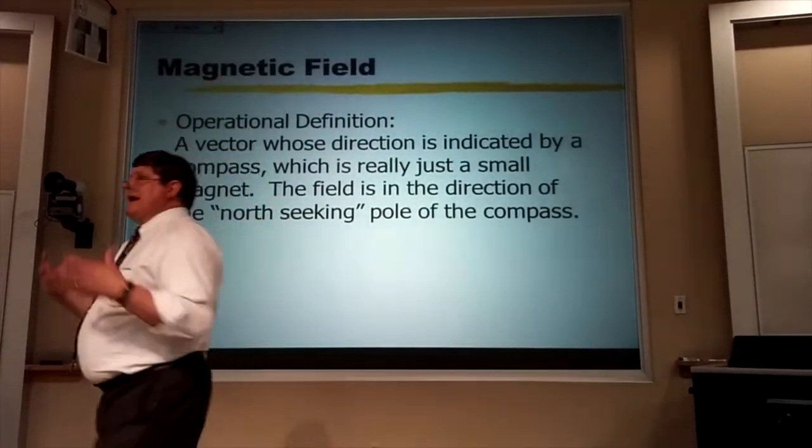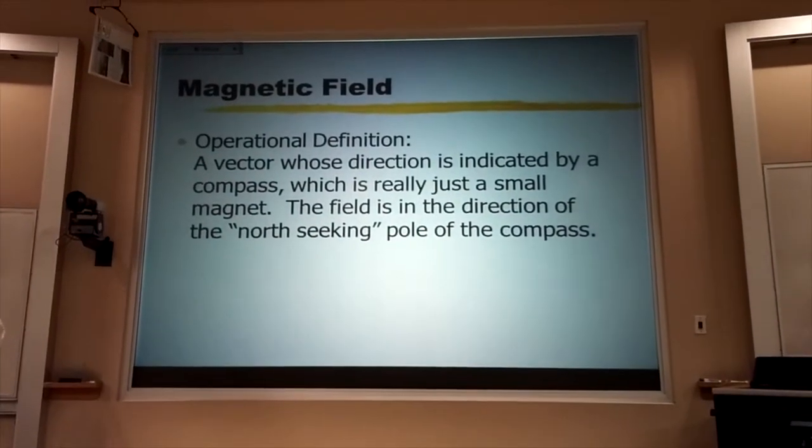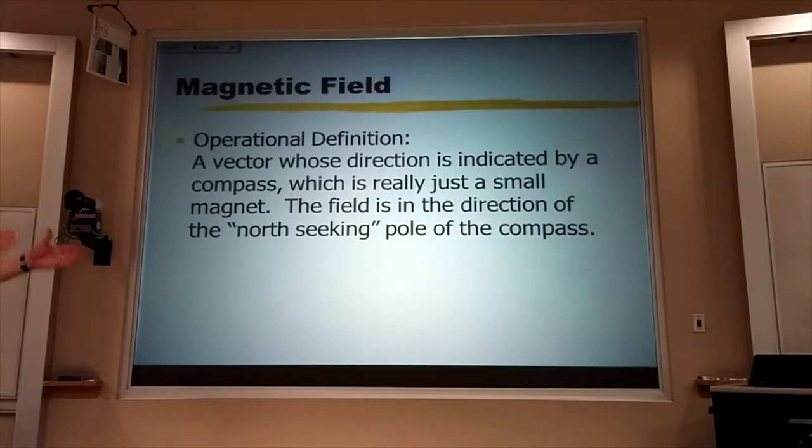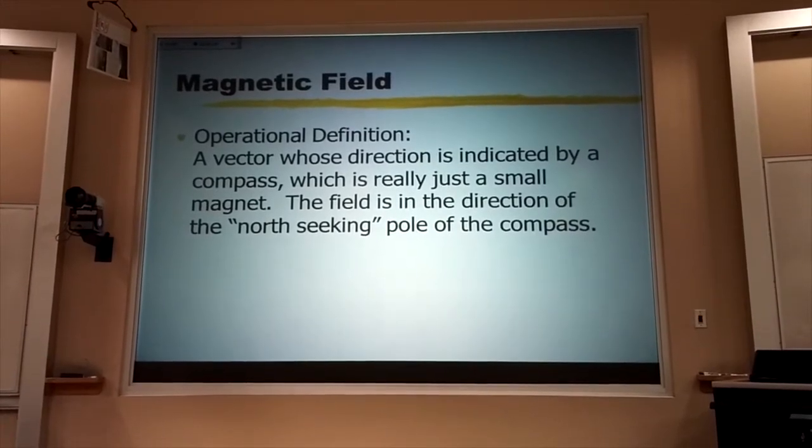And that's the direction of the Earth's magnetic field here in Bozeman - towards Canada and down 70 degrees.